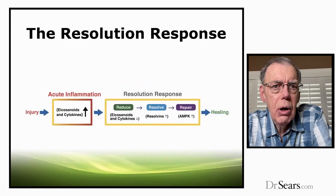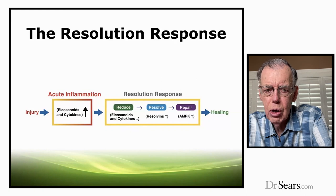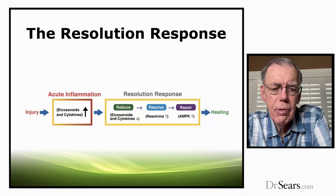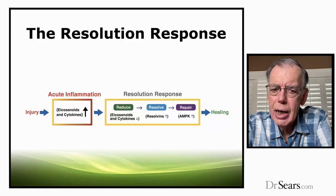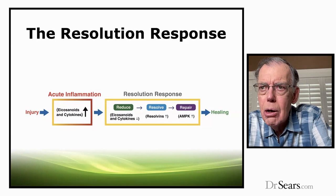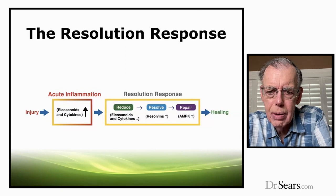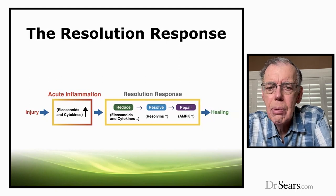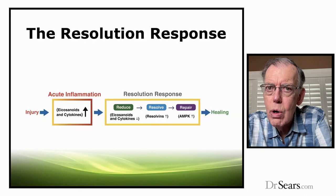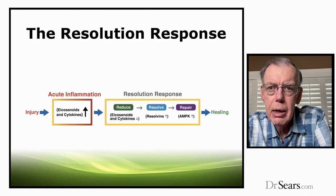What controls healing? The answer is a very complex metabolic state called the resolution response. If the body is exposed to any type of injury, there's acute inflammation — a rise of inflammatory mediators like eicosanoids or cytokines. But that rise in inflammatory mediators now turns on an otherwise quiet resolution response, which is far more complex, with many different components that work to reduce inflammation, resolve it — meaning turn it off — and repair the damaged tissue. If all three of those components are working correctly, the damage heals.